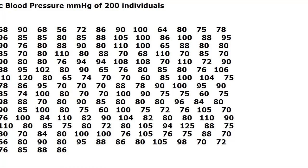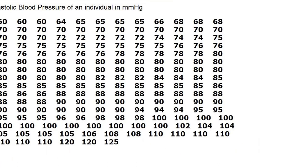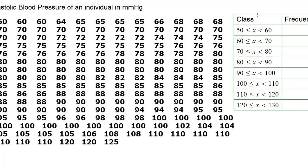What we are going to do first is arrange them in order. Here I have rewritten them in order, and after that we are going to organize them into disjoint classes. So here we have the diastolic blood pressures of 200 individuals in units of millimeters of mercury.